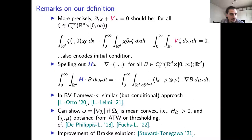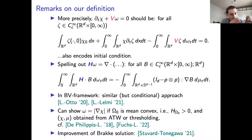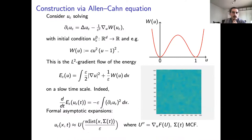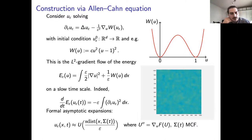Brakke solutions are fatally non-unique: even before singularities, you can take a nice MCF and at any time just continue with the empty set — that is a Brakke solution. That is not the case here, because we have the velocity term. The construction of solutions uses the Allen-Cahn equation, which is also a physical model in its own right, and it's interesting to get connections between different physical models. This is a reaction-diffusion equation.